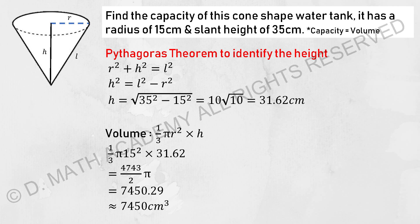So you're required to find the height of this tank in order for you to sub it into your calculation. So by using Pythagoras theorem, your h will actually be 31.62, and by substituting this value into your formula, your final calculation will get you 7,450 cm cubed, which is the capacity of this tank.